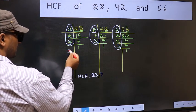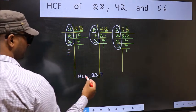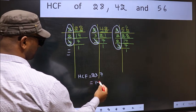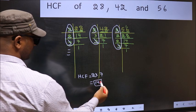No more numbers have been left out. Therefore, our HCF is 2 into 7, 14 is our HCF.